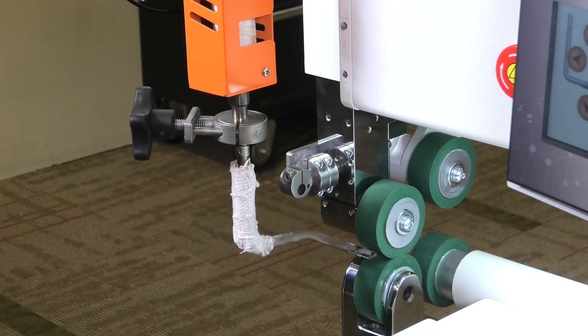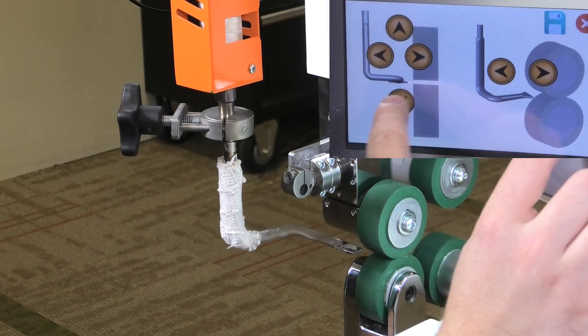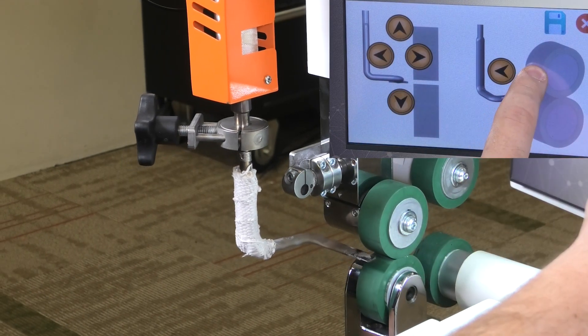Now once that's set up, you'll want to go into your HMI screen to adjust the alignment of the nozzle. Start by moving it to the left, adjusting it down, and bringing it into the weld rollers.